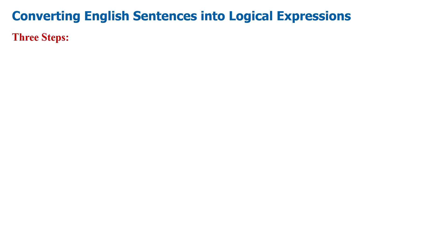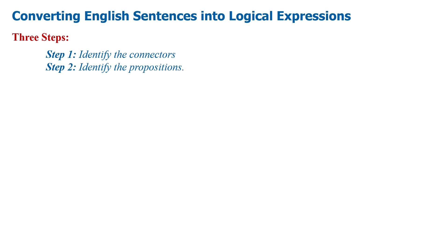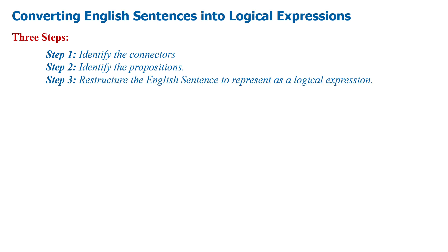The three steps involved in converting any English sentence into a logical expression are: Step 1, identify the connectors. Step 2, identify the propositions. Step 3, restructure the English sentence to represent it as a logical expression.